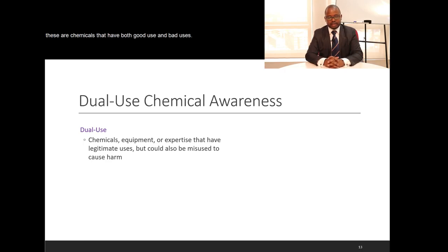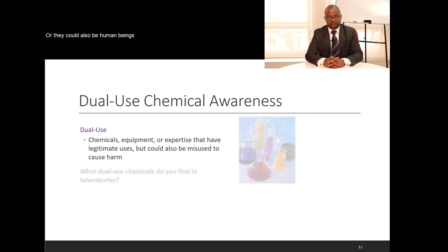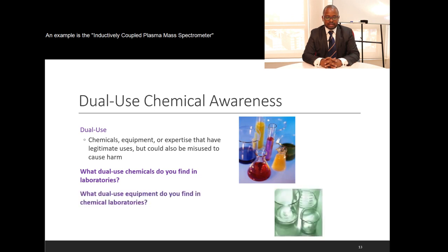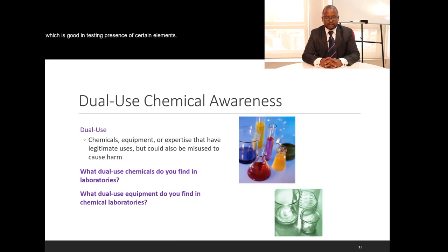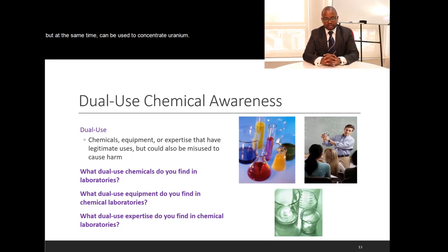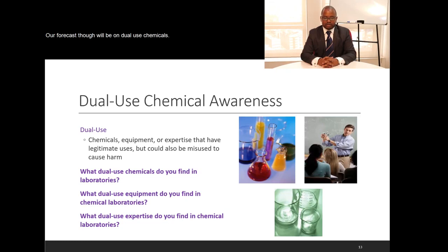Dual use chemicals are chemicals that have both good and bad uses. The concept also applies to equipment — called dual use equipment — and to people, called dual use expertise, who can choose to do good or bad. An example is the inductively coupled plasma mass spectrometer (ICP-MS), which is excellent in analytical chemistry for detecting elements, but the same equipment can also be used to enrich uranium.